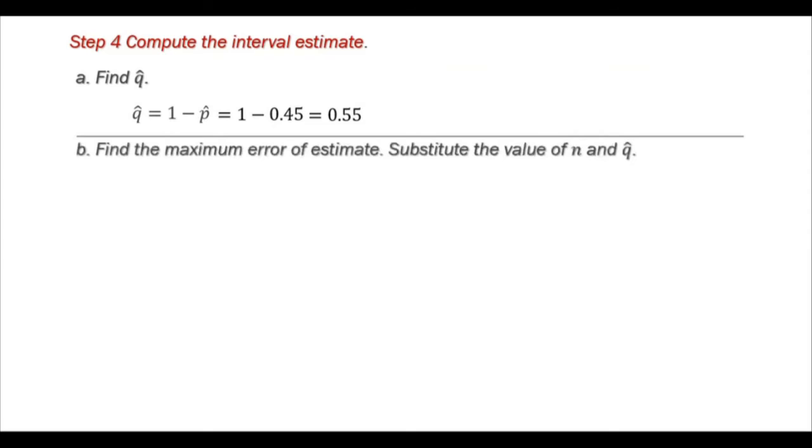Find the maximum error of estimate using the square root of p hat times q hat all over n. P hat is 0.45, so we have square root of 0.45 times q hat 0.55 divided by n, 950, and it is 0.016.